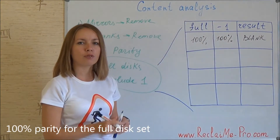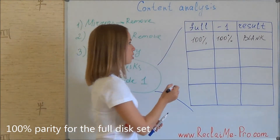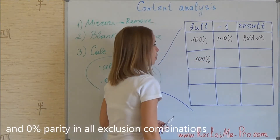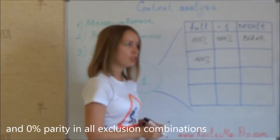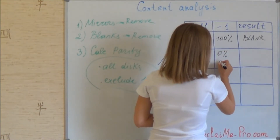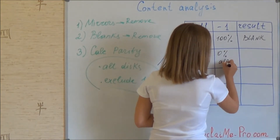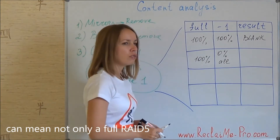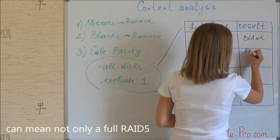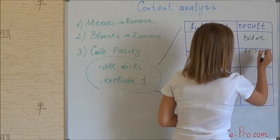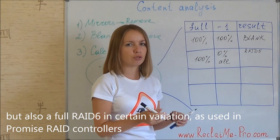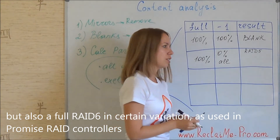100% parity for the full disk set and zero parity in all exclusion combinations can mean not only a full RAID 5, but also a full RAID 6 in a certain variation as used in PROMISE controllers.